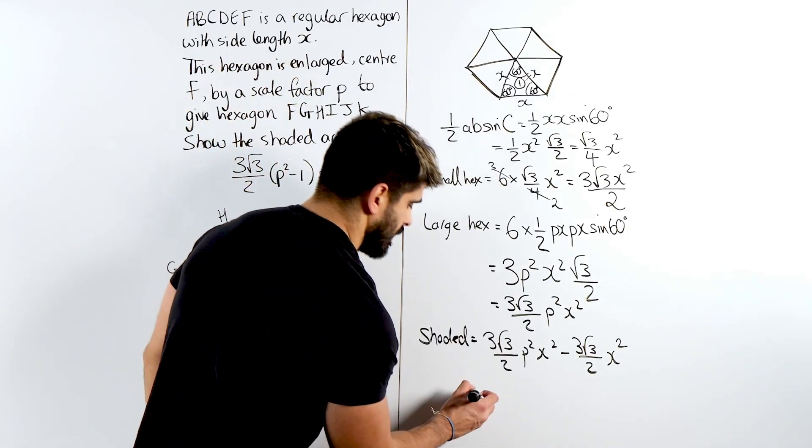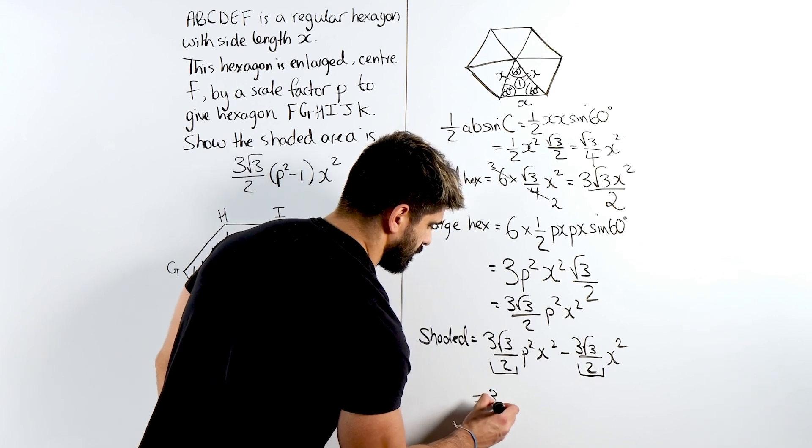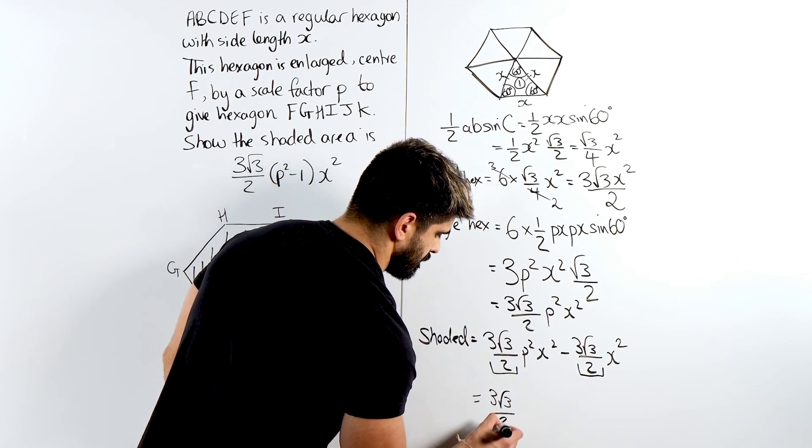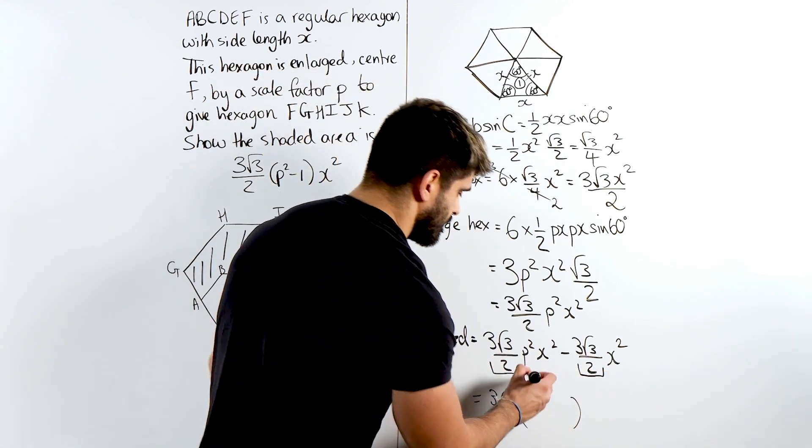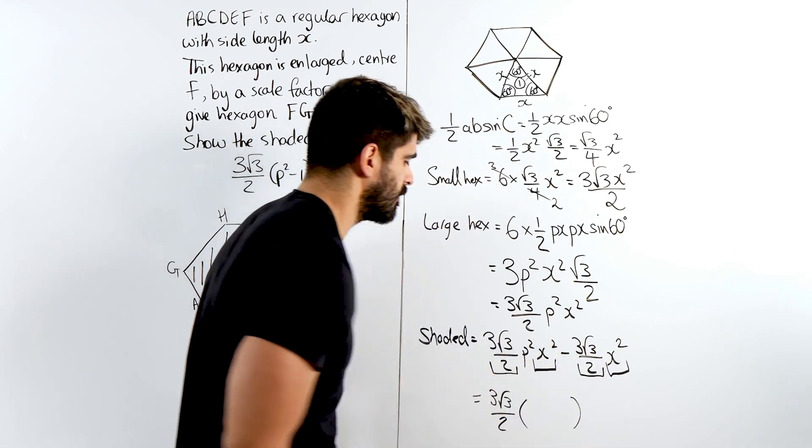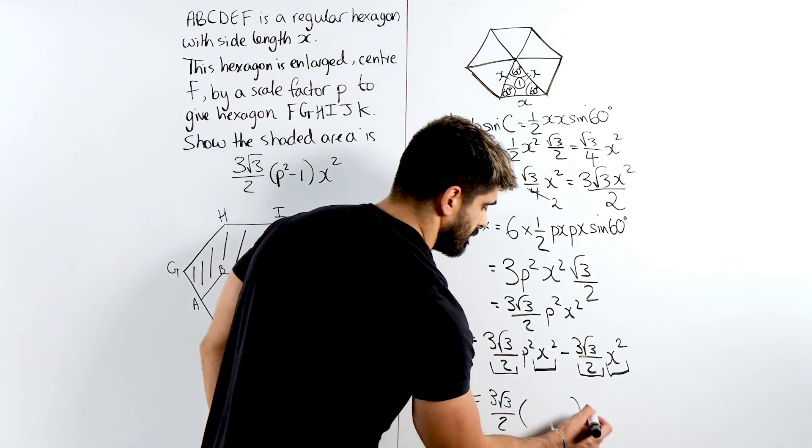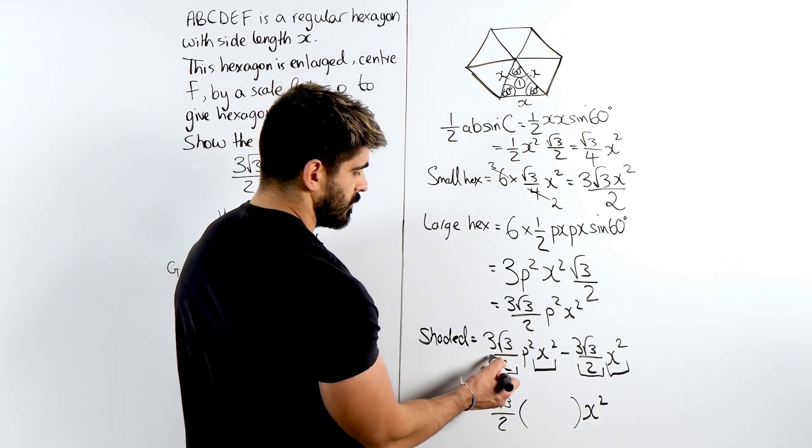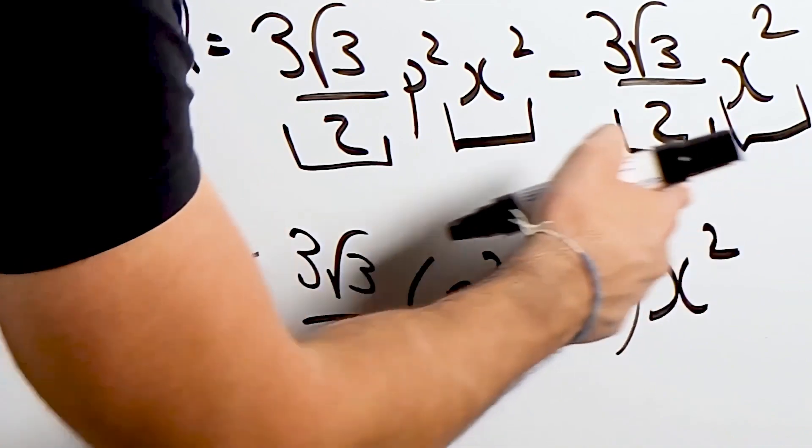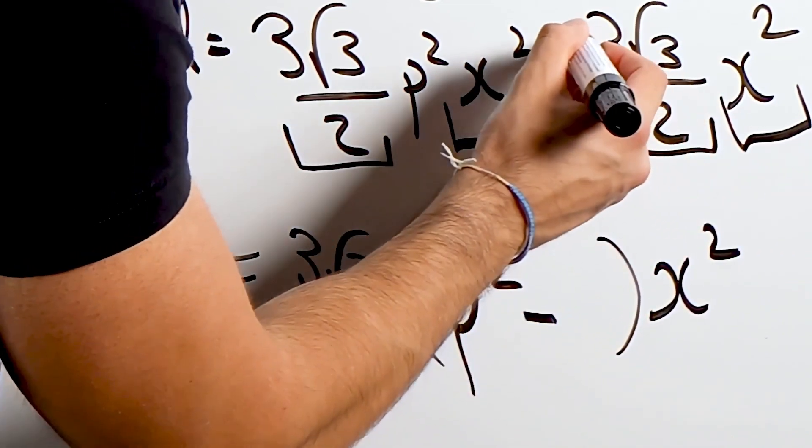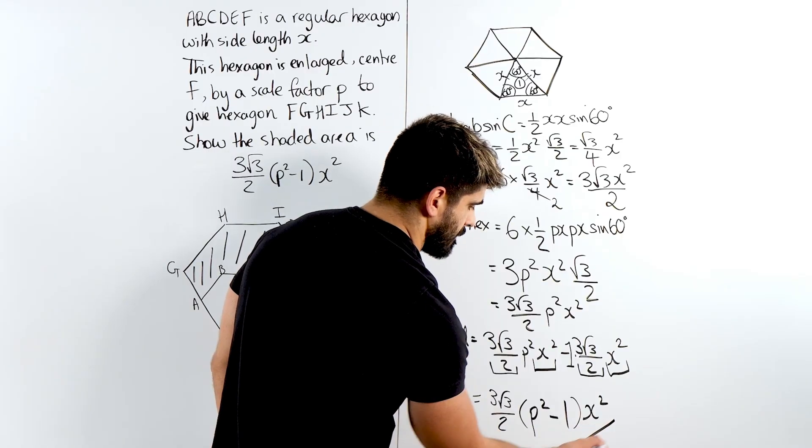So we can see in both of these terms, there is a 3 root 3 over 2. So we can write that on the outside. Open a bracket, close a bracket. But also, they have X squared. We can factorize that out as well. But they've written it at the end here. Not sure why, they just wanted to do that. What would be left? Well, we got rid of this, we got rid of this, we're left with P squared minus. Then here, we're just left with 1. You can think of this as having a giant coefficient of 1 times all this. You've taken these away, we are left with 1. And that is proved.